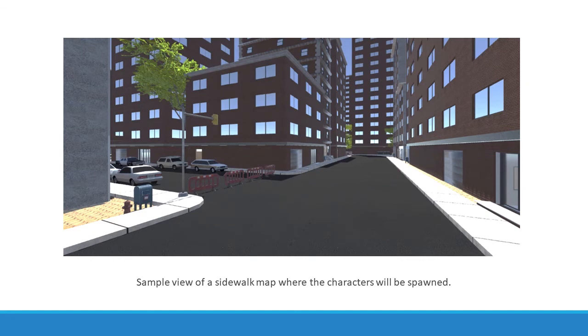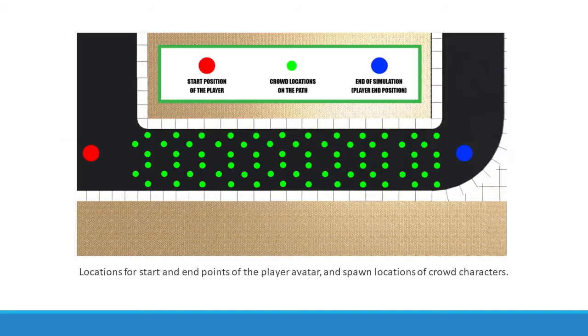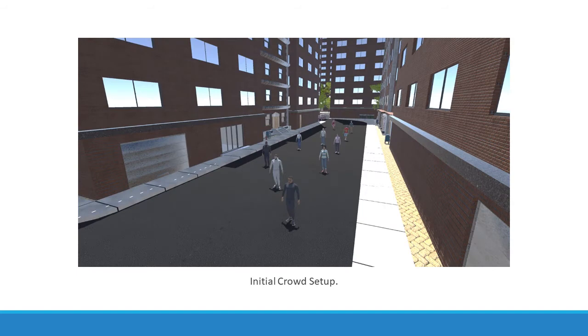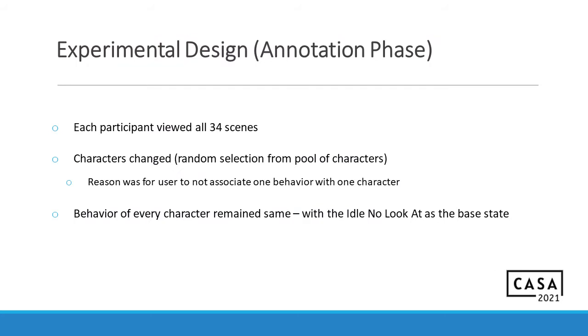Here is a sample view of how the sidewalk looked. We tried to make it look as normal as possible and as less distracting as possible for the participants so that they could focus on the crowd. Here is the grid locations for all the crowd spawning locations as well as the path where the starting position and the end position of the player is displayed. And this is how it looks like when the characters are just spawned in without any sort of behavior applied to them. Moving on. Talking about the experimental design of the annotation phase. We have that each participant will see all the 34 scenes. So, 34 behaviors. In this phase, the characters would change from a random selection of a set number of pool of characters that we pulled in from a site such as Mixamo. And the reason was for the user to not associate one behavior with one character. We wanted the user to just focus on the behavior, not the character themselves.